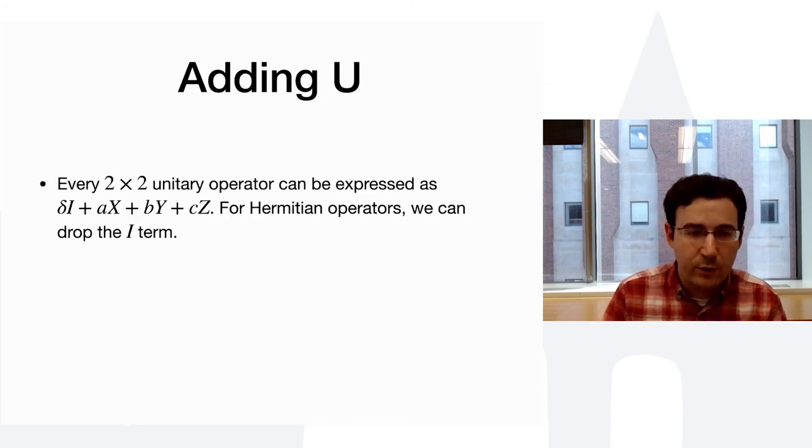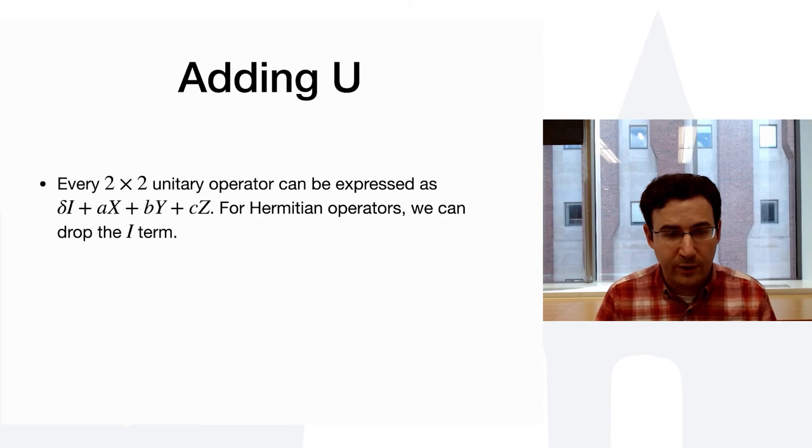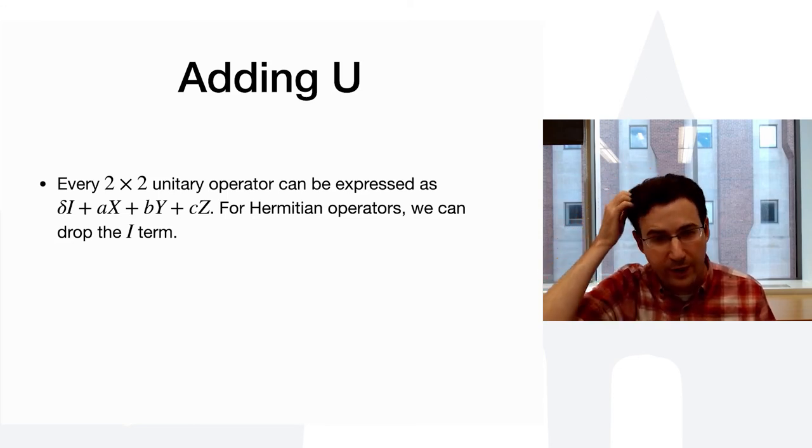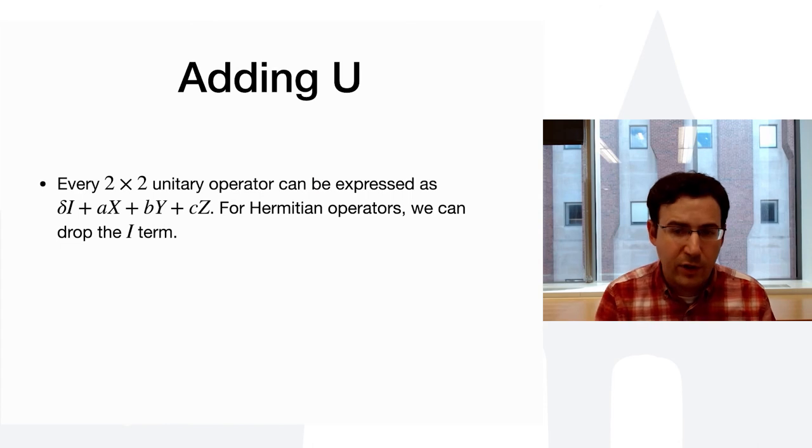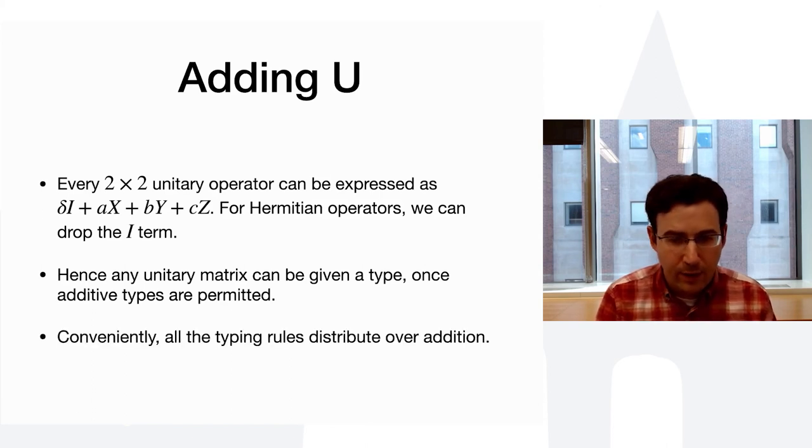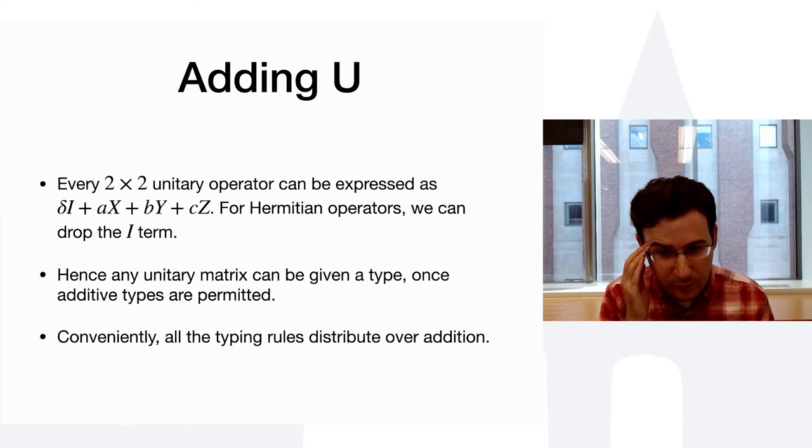Note that this is general. It's not specific to t. Every 2x2 operator can be expressed as a combination of i, x, y, and z. And for Hermitian operators, we can even drop the i term. And therefore, we can give any unitary matrix a type. But, and conveniently, these all distribute over addition. So, things are going to continue to behave nicely.